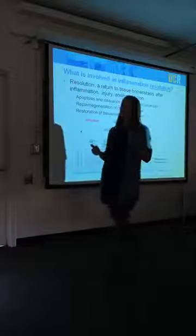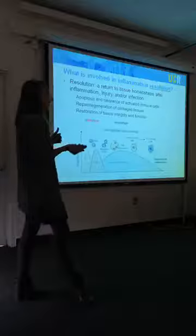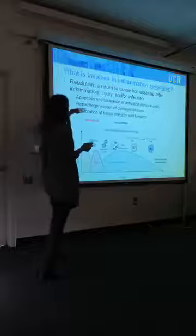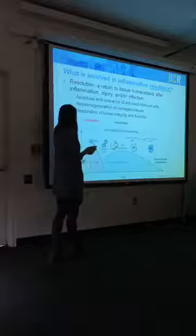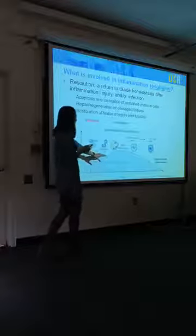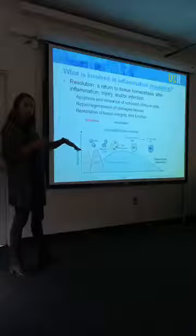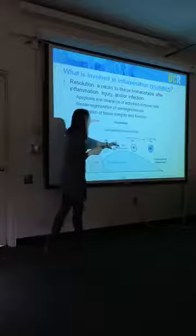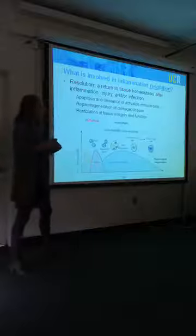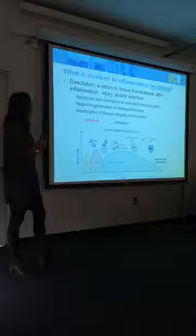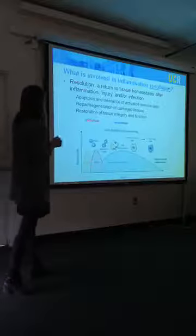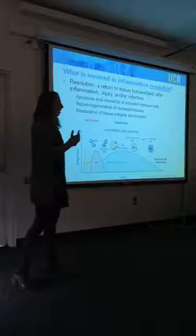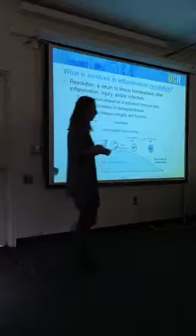Return to tissue homeostasis involves several key factors, including the apoptosis or clearance of immune cells that came into that site. This graphical representation shows the inflammatory process—tissue swelling, neutrophil influx—but then something shifts and we start to turn on repair pathways and recover from that injury. Restitution or resolution also includes repair or regeneration of damaged tissues, and ultimately that tissue needs to be able to function again as it was before the injury.